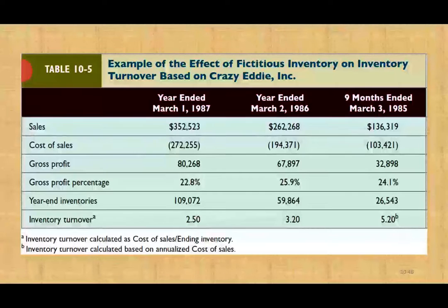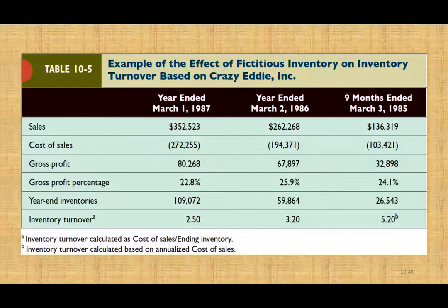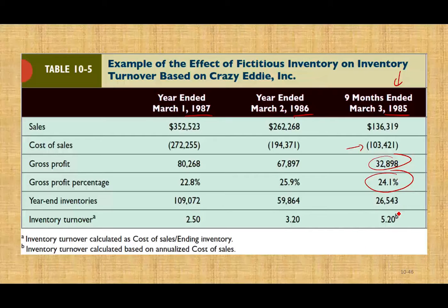Let's take a look at Crazy Eddie. They were in the business of electronics sales — TVs, fans, stereos back in the 80s. Looking at their data for 1985, 1986, and 1987: their gross profit percentage in 1985 was 24% and their inventory turnover was 5.2 times. In 1986, their gross profit percentage went up a little, which could be normal as their sales went up. But what's not normal is their inventory turnover started to slow down — they used to turn over inventory 5.2 times, and now it was slowing down, meaning they were starting to have too much inventory. Their inventory more than doubled between 1985 and 1986.